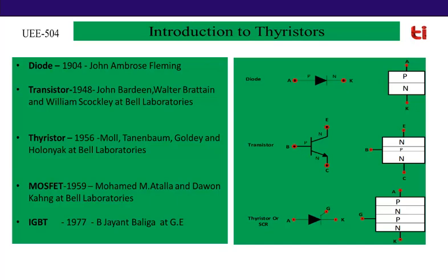The three terminals of the thyristor are anode, cathode, and gate. The anode is connected to positive supply, cathode to negative supply, and gate to positive supply for conduction. The advantage of the thyristor is that it can block very high voltage — because with 4 layers, during reverse bias condition, it can block very high voltage. That is why thyristors are popular for high power applications.